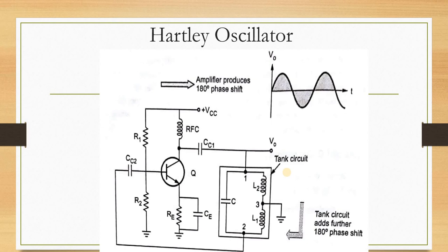The LC tank circuits, along with the transistor amplifier, are used to obtain oscillators called LC oscillators. Due to the supply of energy which replaces losses, the oscillations are maintained — hence called sustained or undamped oscillations.